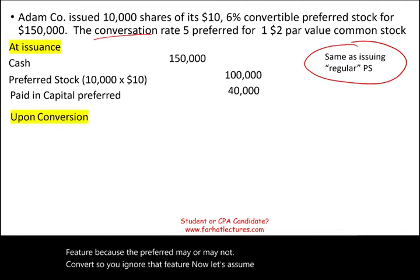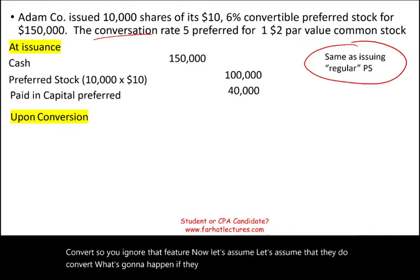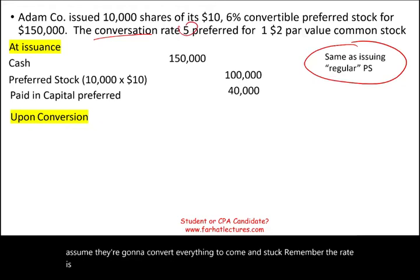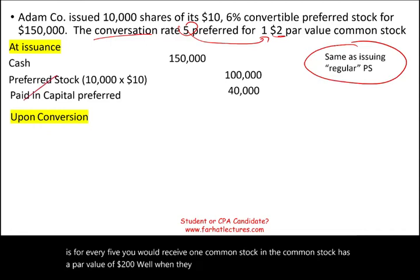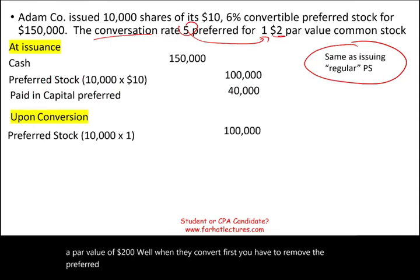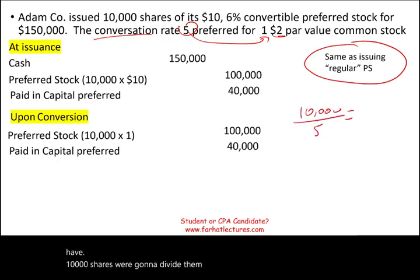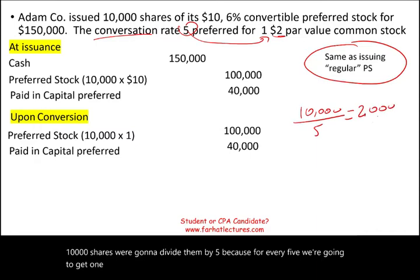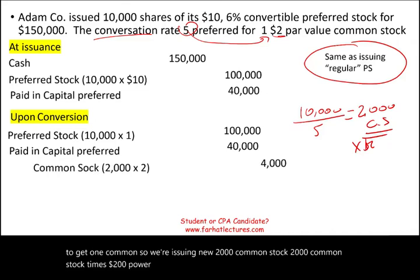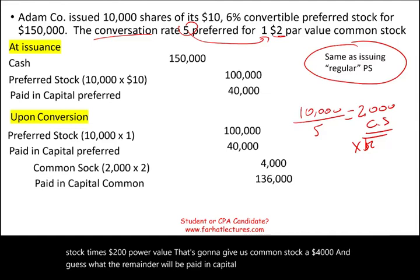Now let's assume they do convert — all preferred shares to common stock. The conversion rate is five preferred for one common, and common stock has a $2 par value. When they convert, first remove the preferred stock and its paid-in capital: debit preferred stock and debit paid-in capital preferred. Then issue the new stock: 10,000 preferred shares divided by five equals 2,000 new common shares. 2,000 shares × $2 par value gives us common stock of $4,000, and the remainder is paid-in capital common stock of $146,000.